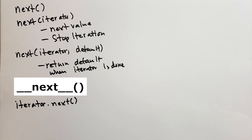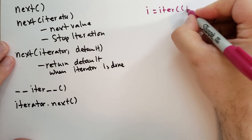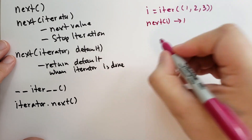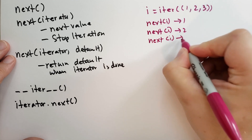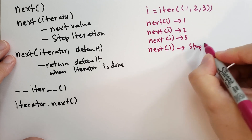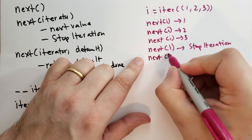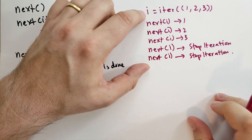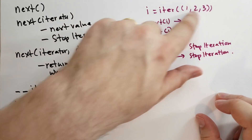Let's do some examples. This iterator, i, is going to iterate across the three values in a tuple. When you call next on i the first time, it will return the first item, one. When you call next on i again, it will return the next value, and then the next. When you call next a fourth time, it will raise StopIteration, and of course if you continuously call next on i, it will keep raising StopIteration. You can see how putting these next statements inside a while loop and catching the StopIteration exception allows you to iterate across any kind of sequence.